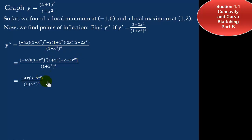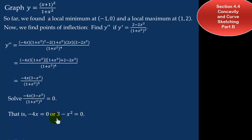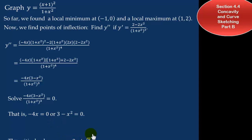This is the second derivative; we set it equal to 0. The denominator will not be 0, but we can set the top equal to 0. We see that negative 4x equals 0, or 3 minus x squared equals 0. Setting 3 minus x squared to 0 means x squared equals 3. Taking the square root of both sides, x equals plus or minus the square root of 3, and of course x equals 0. So the critical values for points of inflection are x equals 0 and x equals plus or minus the square root of 3.